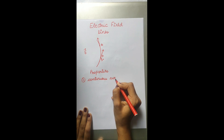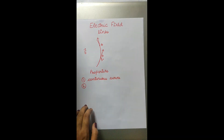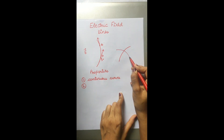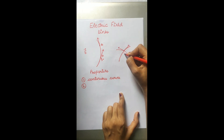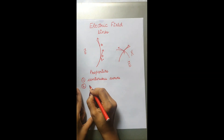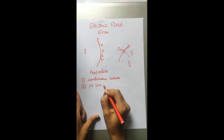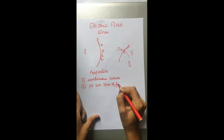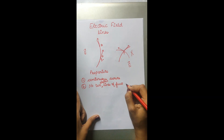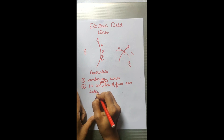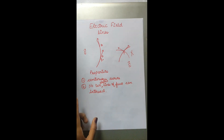The second property: no two lines of force can cross each other. Suppose I have one electric field line going in one direction and another electric field line going in another direction due to some electric field E. At a common point P, the tangent for each curve would give a different direction, meaning two directions of electric field at the same point — which is not possible. Hence, no two electric field lines can intersect.